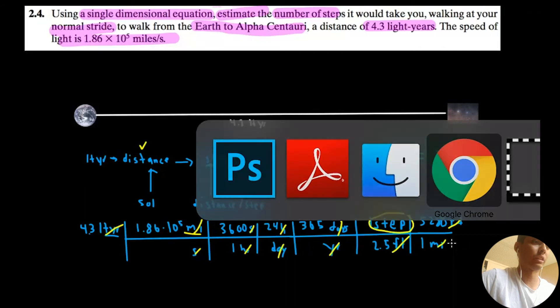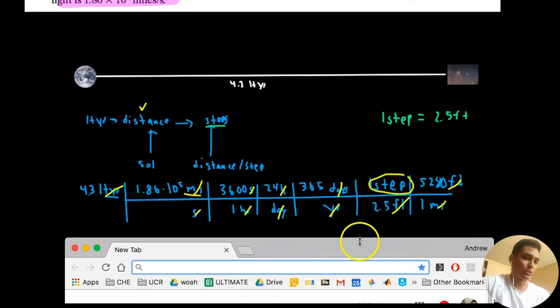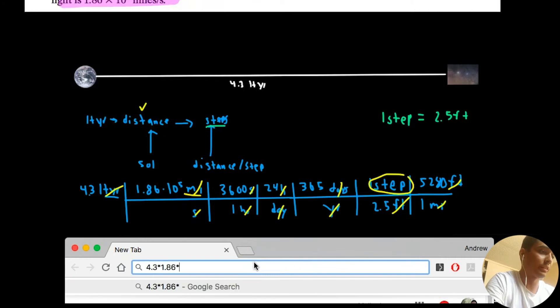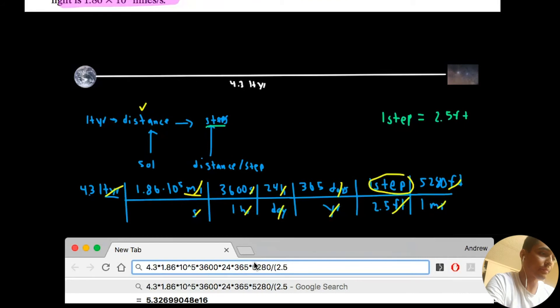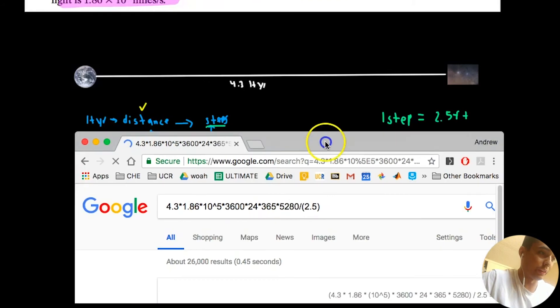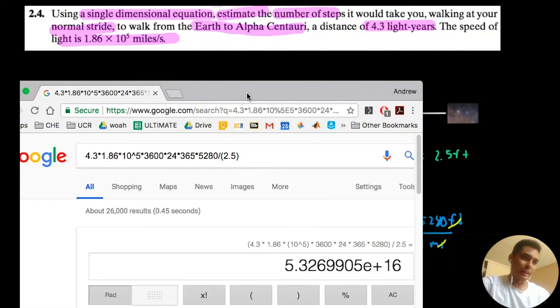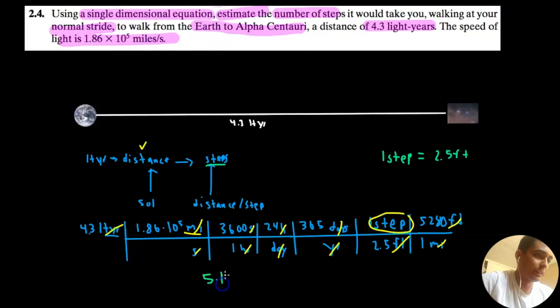So, supposedly if I input this calculation, this is a single dimensional equation. So, it's just one big huge crazy equation. 4.3 times 1.86 times 10 to the 5. I'm going to do everything on top divided by everything on bottom. Times 3,600 times 24 times 365 times 5,280 feet divided by 2.5. 5.3 times 10 to the 16. This is crazy. That's a large number of steps.